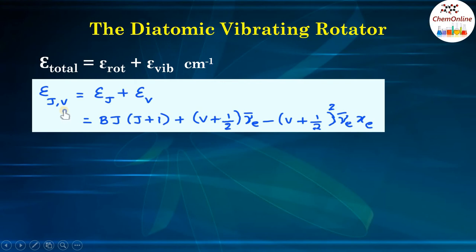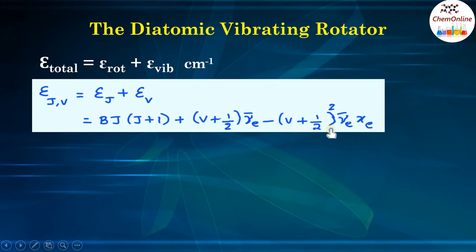That is, epsilon(j,v) equals epsilon_j plus epsilon_v, which equals Bj(j+1) — the rotational term — plus (v + 1/2)ν̃_e minus (v + 1/2)² ν̃_e x_e, which is the vibrational term, where x_e is the anharmonicity constant and ν̃_e is the equilibrium vibrational frequency.